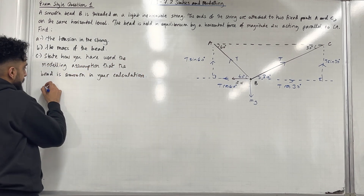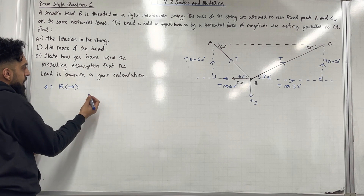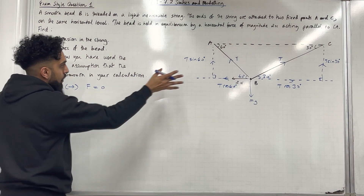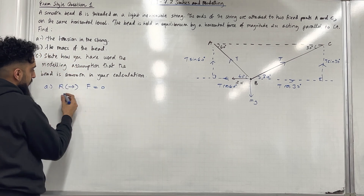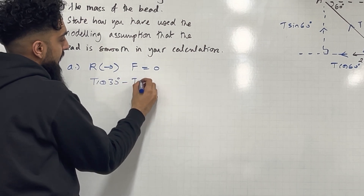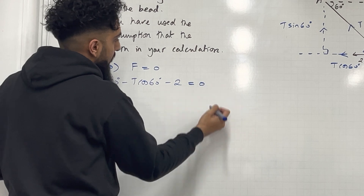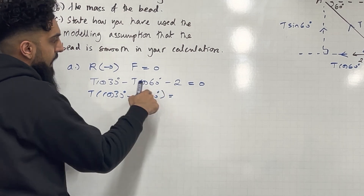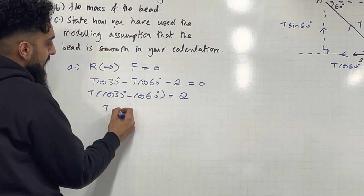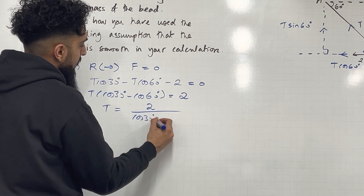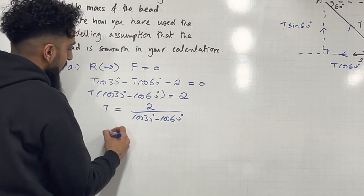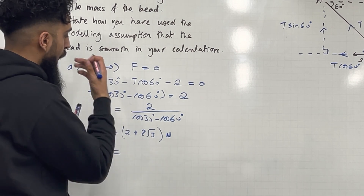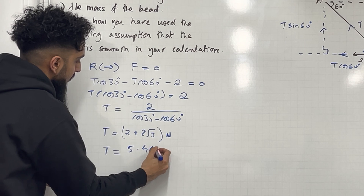Here is part A. Resolve horizontally, taking right to be the positive direction. The resultant force F is equal to zero because the bead is in equilibrium. So we have T cos 30° minus T cos 60° minus 2 equals 0. Factoring out T and rearranging gives T equal to 2 divided by (cos 30° minus cos 60°), which gives 2 plus 2√3 newtons in exact form, or 5.46 newtons to three significant figures.